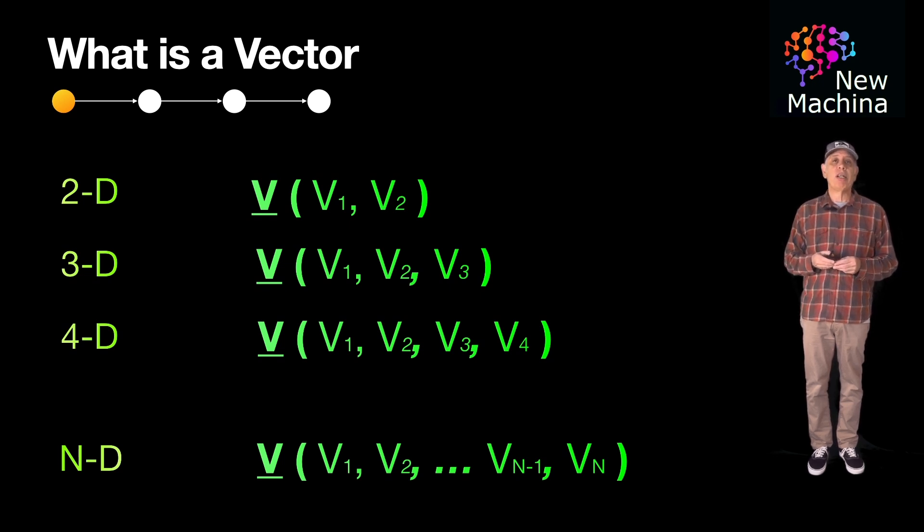Common operations on all vectors include addition, subtraction, scalar multiplication, dot products, and cross products. Quick note, you will notice I skipped over one dimensional vectors. The reason is a one dimensional vector is really just a simple number or scalar value. So they're typically not used by LLMs.